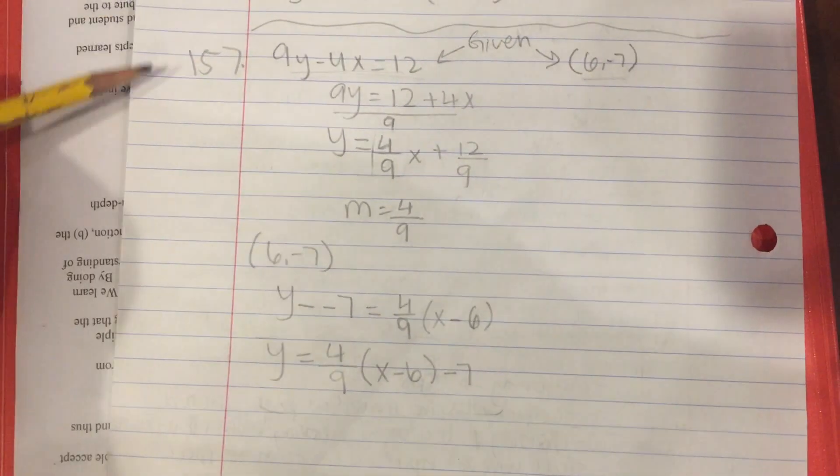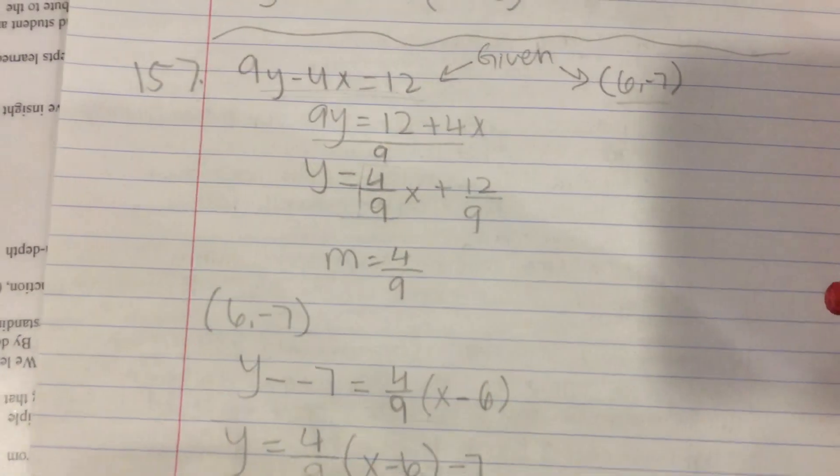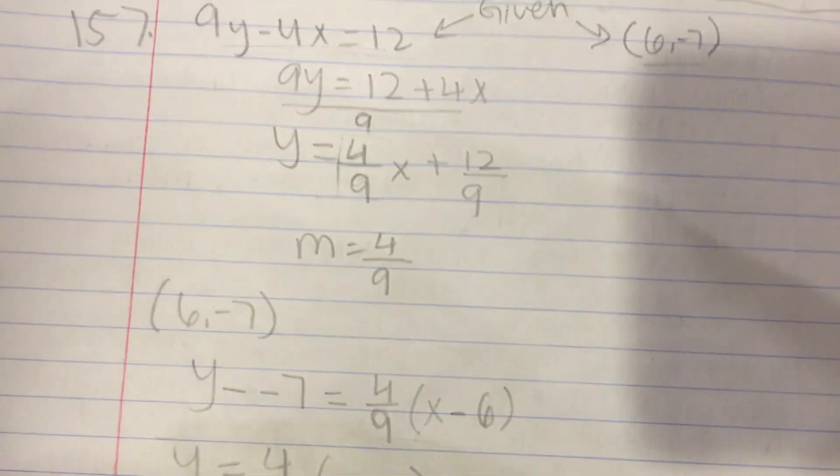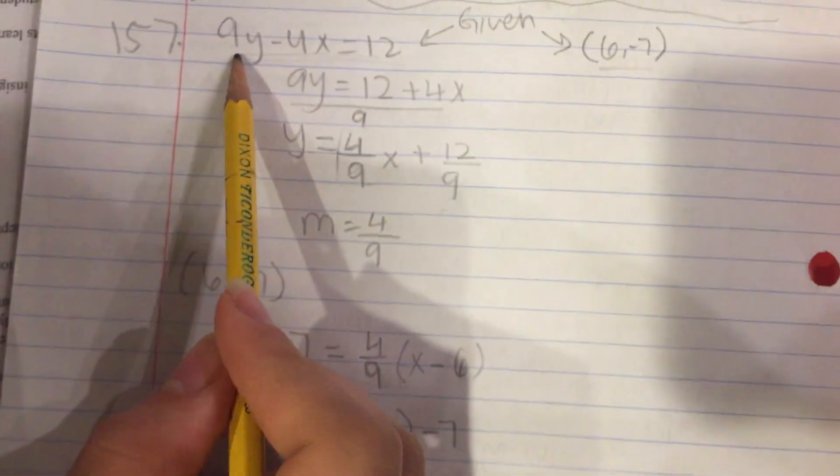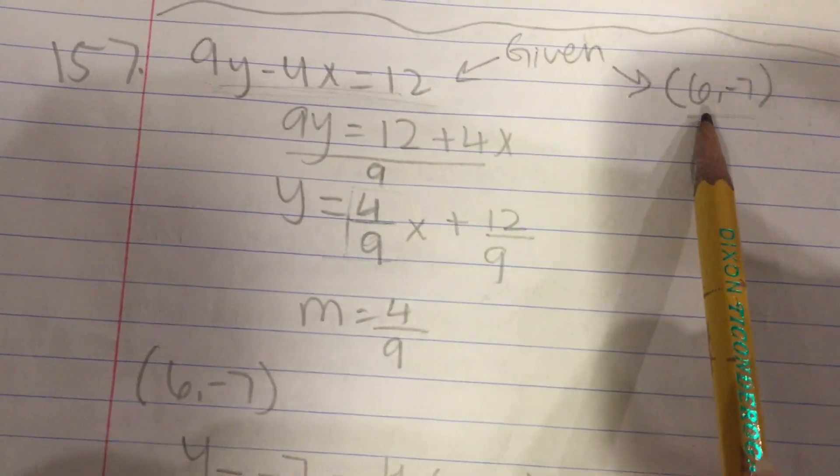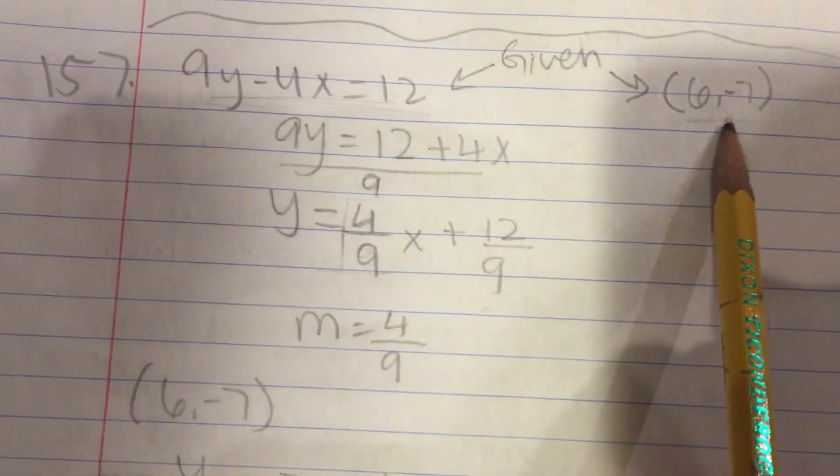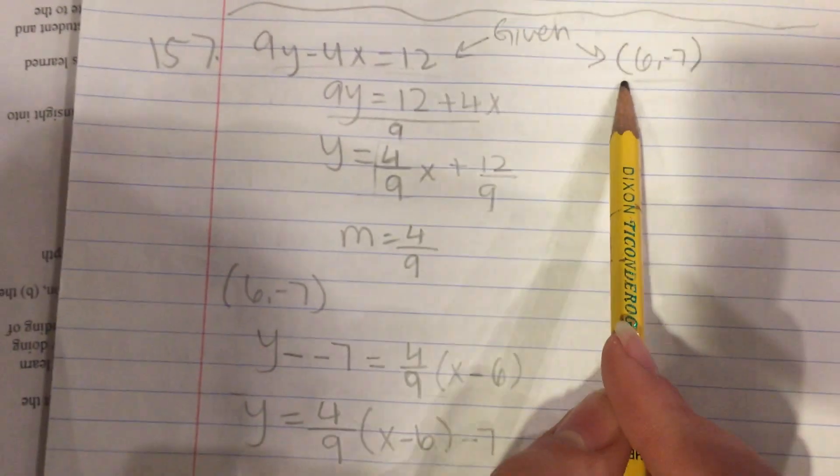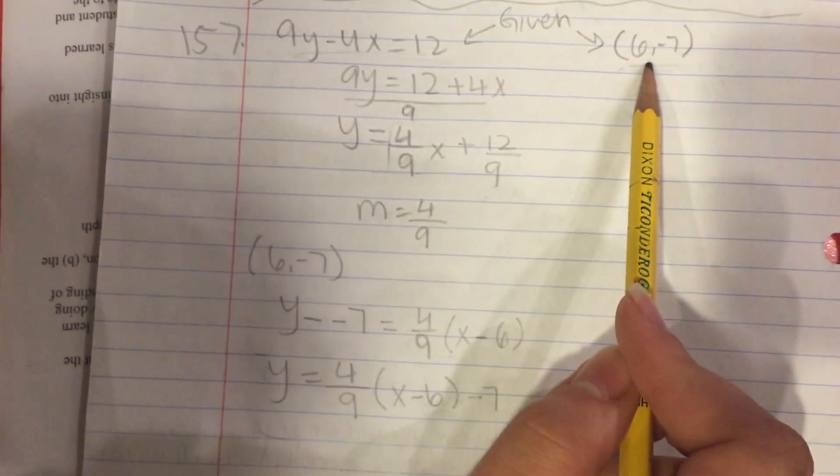I'm solving question 157 from chapter 1. It gives us an equation of a line: 9y minus 4x equals 12, and a point (6, -7). They ask to find an equation for a line with the point